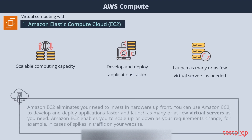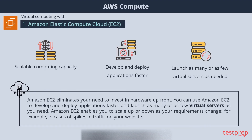Amazon EC2 provides you with scalable computing capacity, eliminating your need to invest in hardware up front. You can use Amazon EC2 to develop and deploy applications faster and launch as many or as few virtual servers as you need. Amazon EC2 enables you to scale up or down as your requirements change — for example, in cases of spikes in traffic on your website.